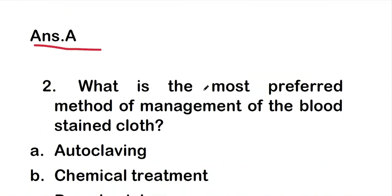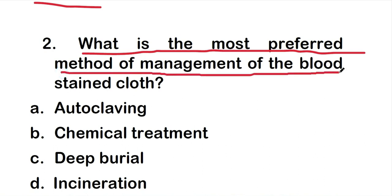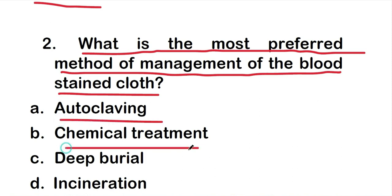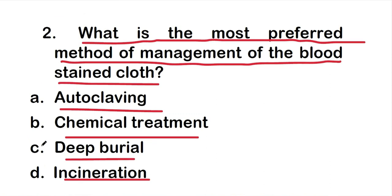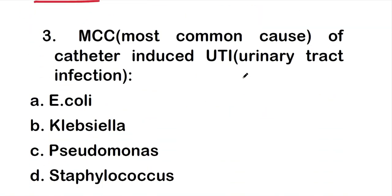Question 2: What is the most preferred method of management of blood-stained clothes? The options are autoclaving, chemical treatment, deep burial, or incineration. The right answer is option C: deep burial. Deep burial is the most preferred method of management of blood-stained clothes.